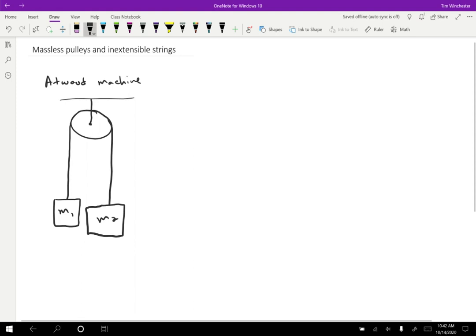Once we let this thing go, M1 is going to move upward and M2 is going to move downward. What we want to do then is assuming we know those masses, we want to find the acceleration. That's the problem.